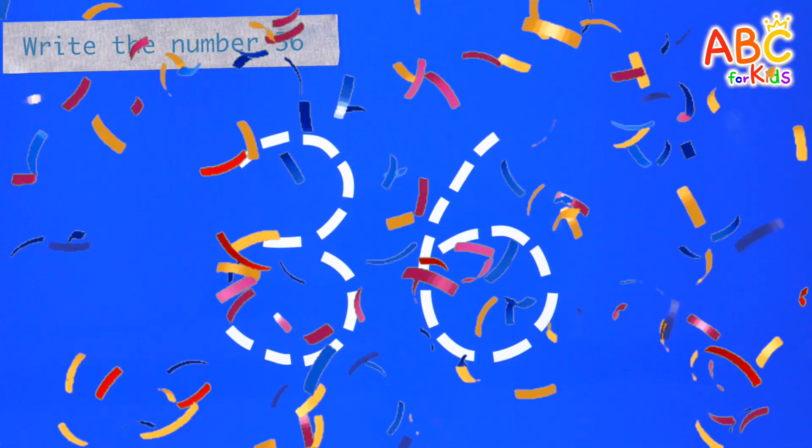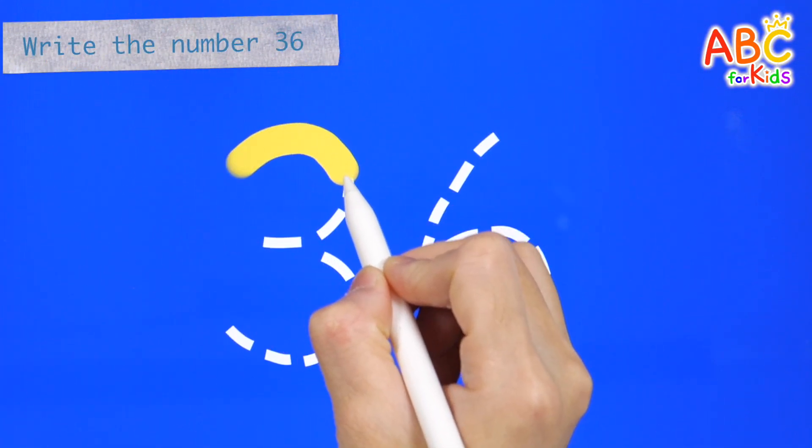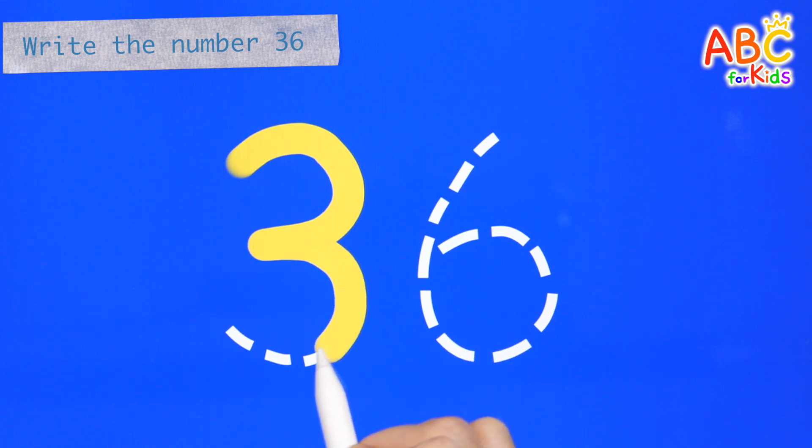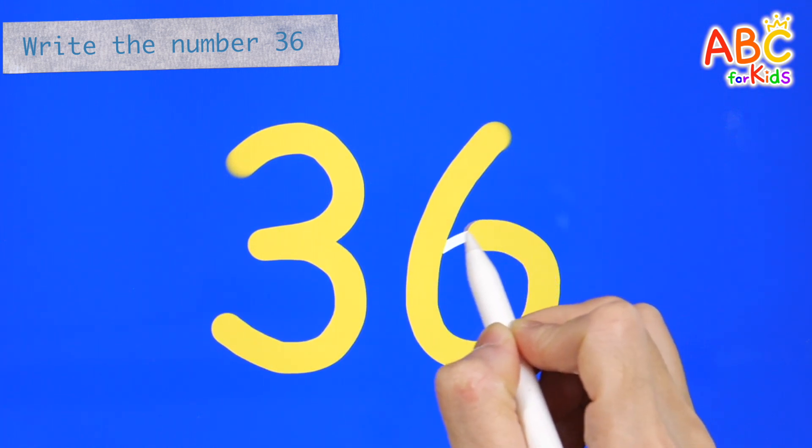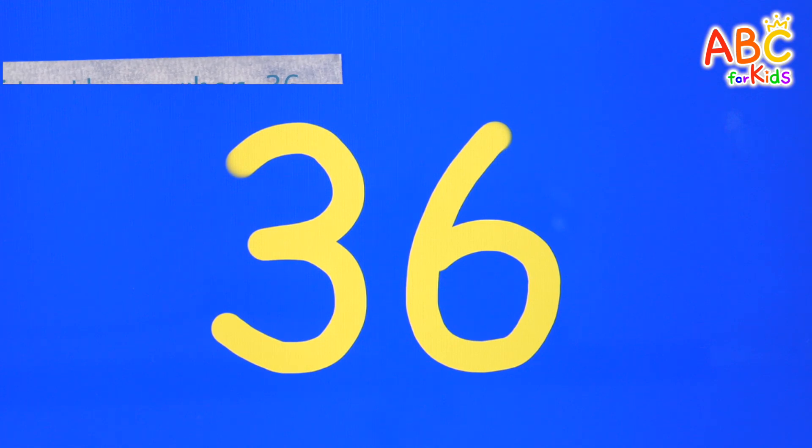The number we're learning today is thirty-six. Wow! Let's write numbers in yellow on a blue background. Thirty-six. Good job!